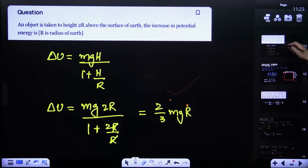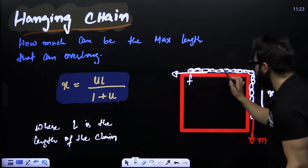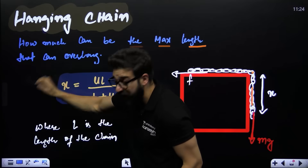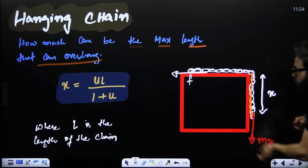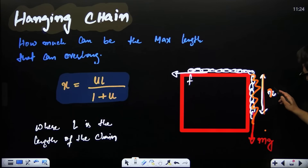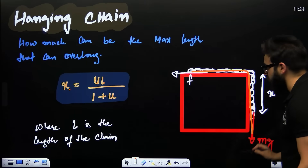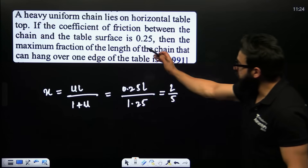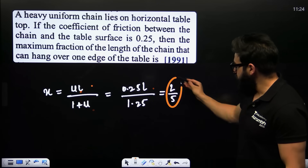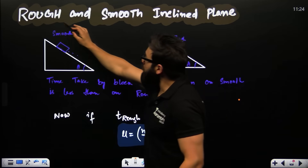The hanging chain problem: if a chain of length L is on a table and hangs over the edge, the maximum length X that can hang without the chain falling is X = μL/(1 + μ), where μ is the coefficient of friction. For example, applying this formula with a given μ gives an answer of L/5.